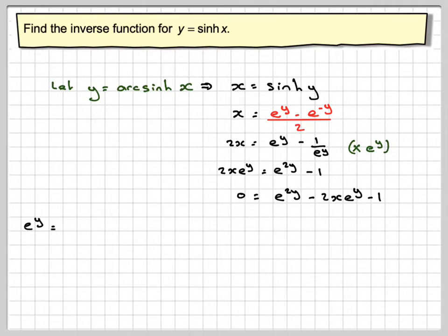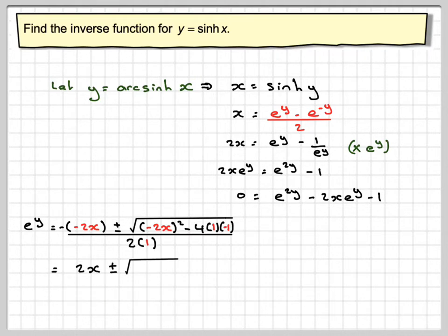So e to the y will be minus minus 2x, plus or minus the square root of minus 2x squared, minus 4 times 1 times minus 1, over 2 times 1. That gives us 2x, the square root of 4x squared plus 4, that's plus because of minus and minus, over 2.